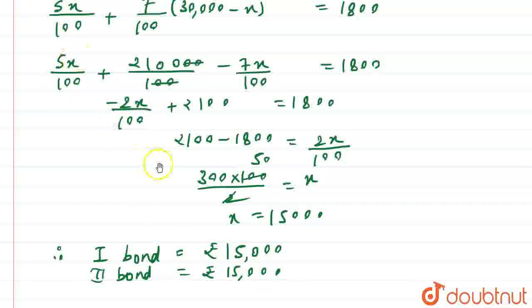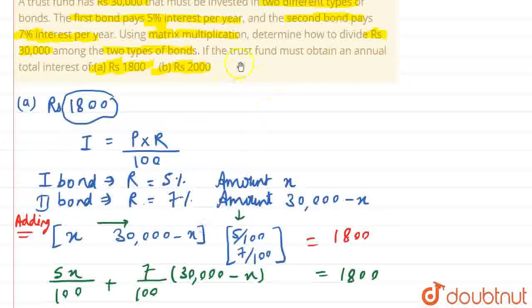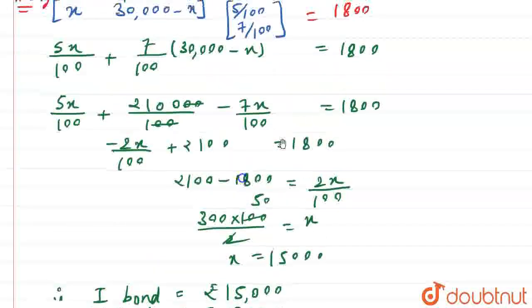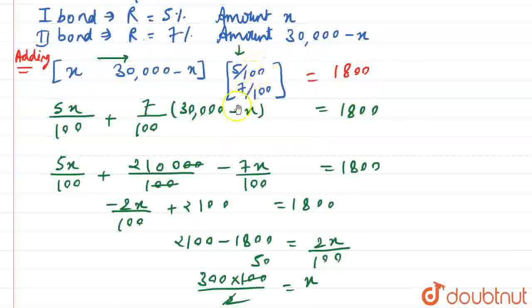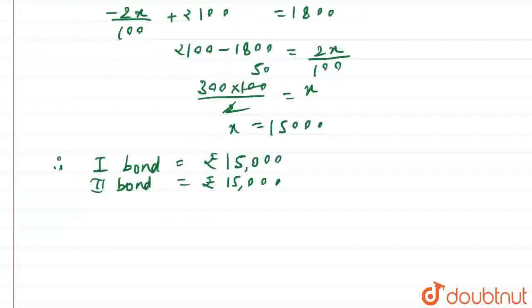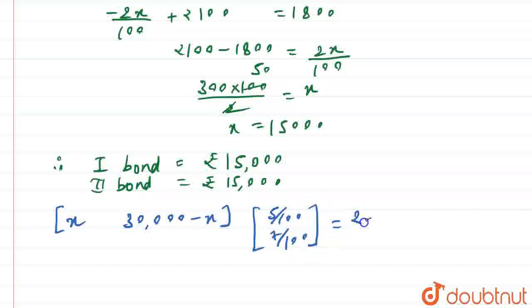Now let us solve Part B, where the trust fund must obtain an annual total interest of Rs. 2000. The bonds remain the same — only this target interest value changes to 2000. The matrix multiplication setup is the same: [X, 30,000 − X] × [5/100, 7/100] = 2000.